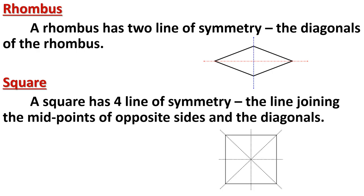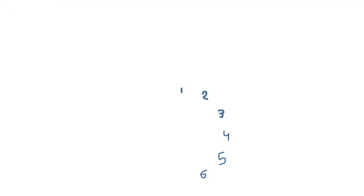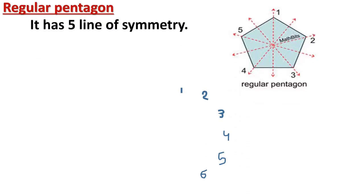Next is the regular pentagon. A pentagon has five sides, and 'regular' means all five sides are equal. A regular pentagon has five lines of symmetry. You can check this by making a cutout and folding from each vertex to the midpoint of the opposite side along all five vertices.